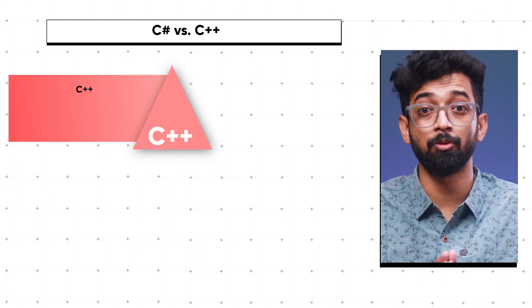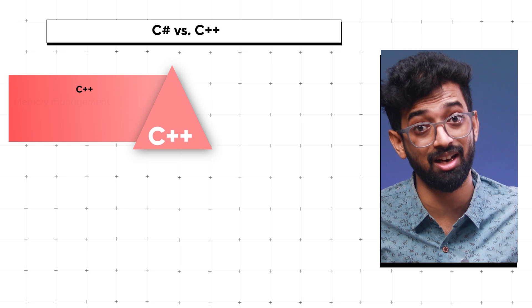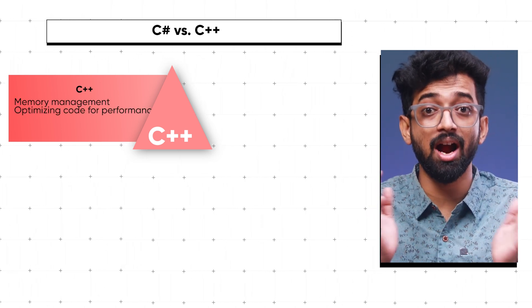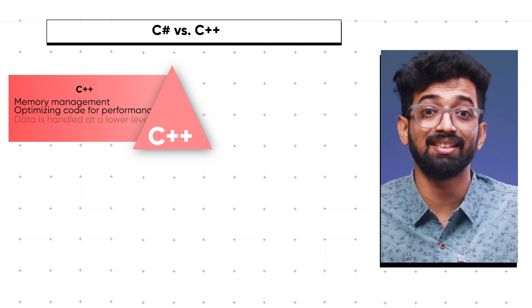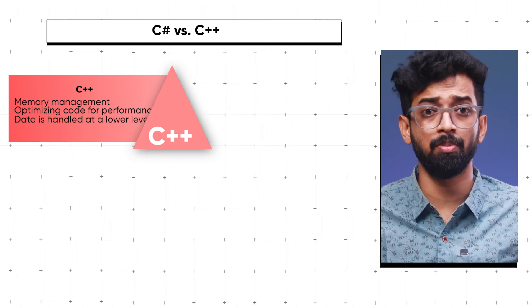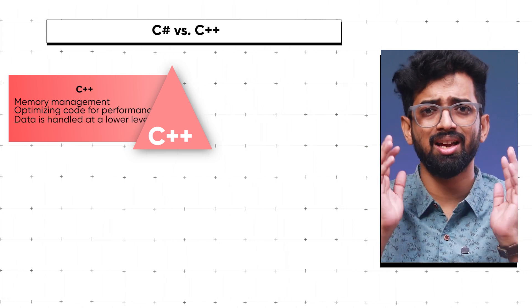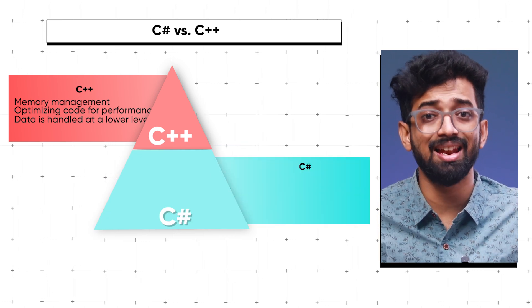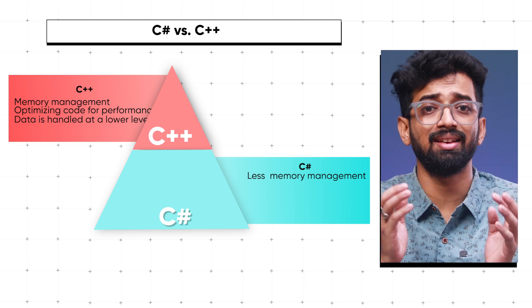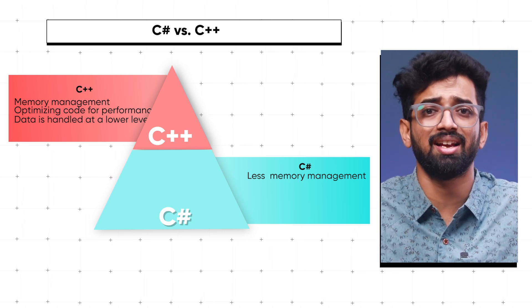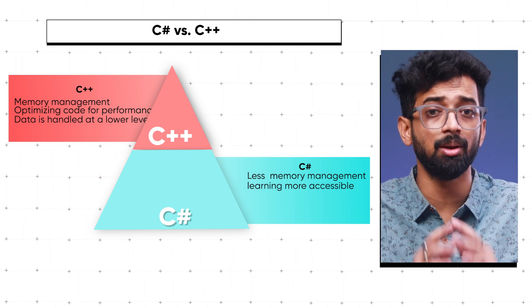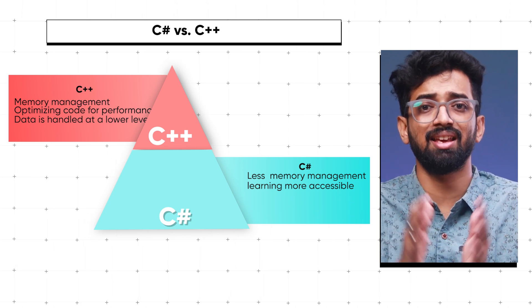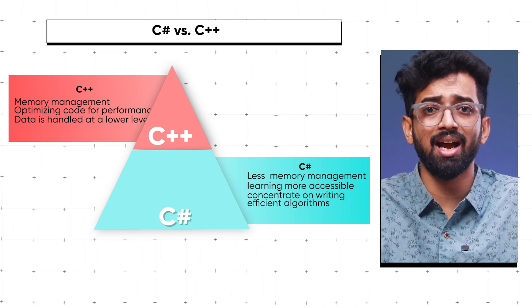Alright, let's get into the heavyweight matchup: C# versus C++. C++ is the go-to for those who love to deep dive into memory management. If you are optimizing code for performance and really need to understand how data is handled at a lower level, C++ shines. But here's the thing — C#'s managed environment means less memory management. Some might say that's a disadvantage, but it can actually make DSA learning more accessible. The garbage collector in C# takes care of memory for you, so you can concentrate on writing efficient algorithms without sweating over memory leaks.